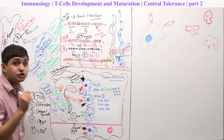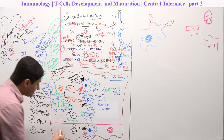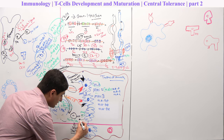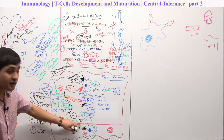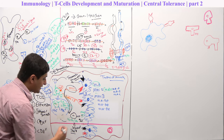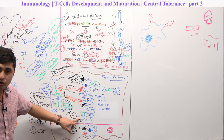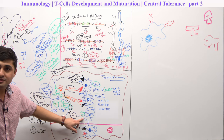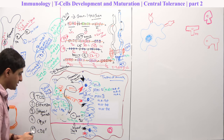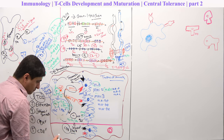But if these T cells strongly bind to MHC1 with high affinity, then the thymic epithelium will secrete a product — and there is going to be a Fas ligand — which results in apoptosis. Important concept: if there is low affinity binding with MHC1, these T cells will be selected as CD8 positive cytotoxic T cells.